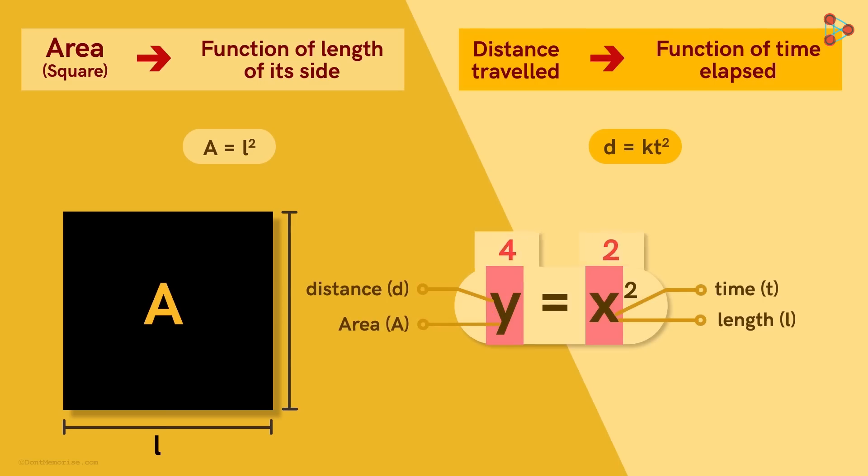As we put different values of X here, we will get different values of Y. So X is called the independent variable and Y is called the dependent variable.